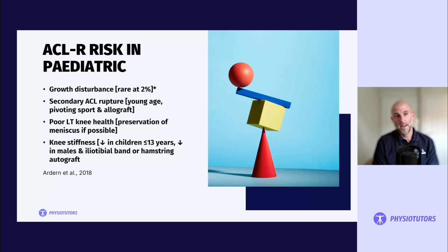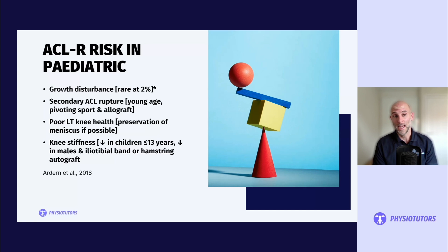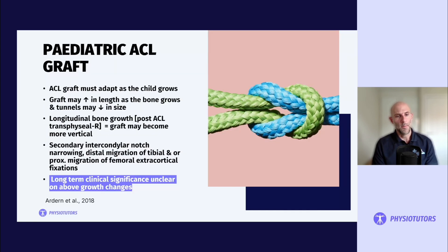The risk of ACL reconstruction in children is generally low. Growth disturbance occurs in approximately 2% of cases. Secondary ACL rupture can be more common, particularly in younger patients, those returning to pivoting sports, and those who received an allograft. We're not yet certain of the long-term clinical significance of these growth changes.